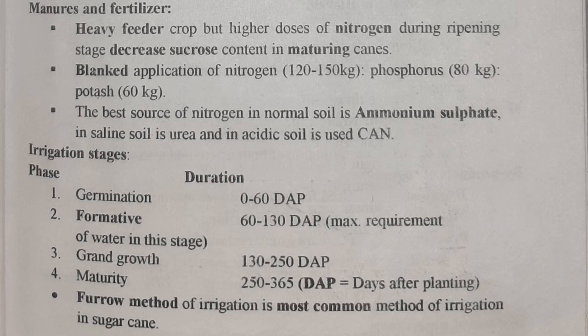Sugarcane is a heavy feeder crop. However, high doses of nitrogen during ripening stage decreases sucrose content in maturing canes, so nitrogen should not be applied heavily at ripening stage. Recommended doses: nitrogen 122–150 kg, phosphorus 80 kg, and potash 60 kg. The best source of nitrogen in normal soil is ammonium sulfate, in saline soil is urea, and in acidic soil is CAN.